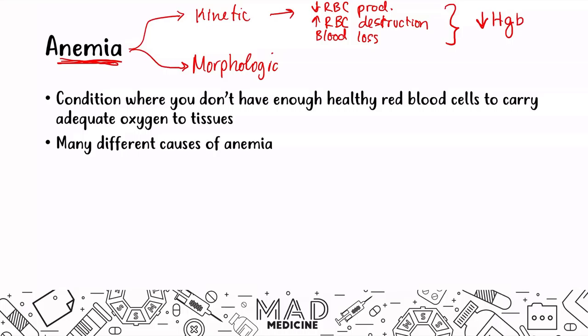When it comes to the morphologic approach for evaluating an anemia, you're going to be looking at the red blood cell size. You can have an increased red blood cell size, a normal red blood cell size, or a decrease in your red blood cell size. Mainly in this approach you are looking at something called the MCV, which we've already talked about in our previous lectures on red blood cell measurements and indices.